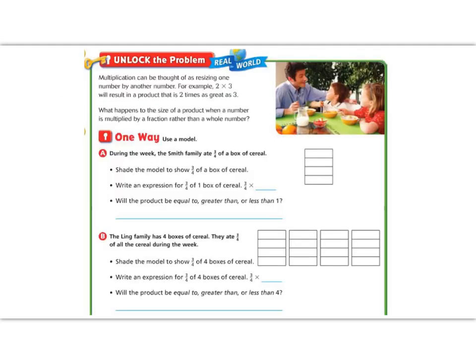Let's jump into today's lesson with the unlock the problem. Multiplication can be thought of as resizing one number by another. For example, 2 times 3 is the result of a product that is 2 times as large as 3. What happens to the size of a product when a number is multiplied by a fraction rather than a whole number? If we multiply 3 times 1 our size would stay the same, if we multiply 3 times 2 our size would get larger, but if I multiply 3 by one half, I'm going to get smaller, because I'm multiplying by a number less than 1.